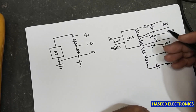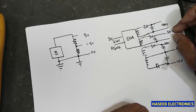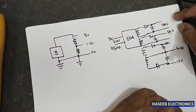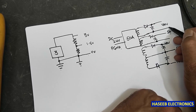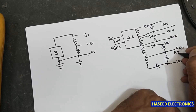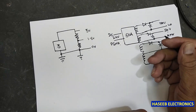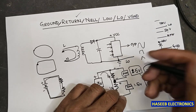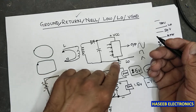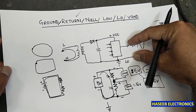When a power supply provides multiple isolated outputs, we need to know the flow of current in each section. Every component is referred to its own low point — the return point of that circuit. To test any signal from any IC, we must verify the ground pin of that IC and check whether it is connected to the correct source ground.